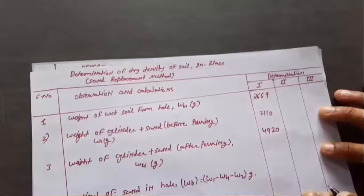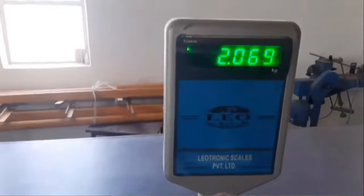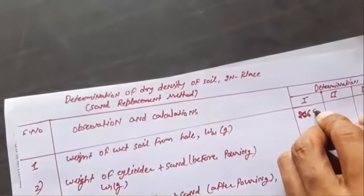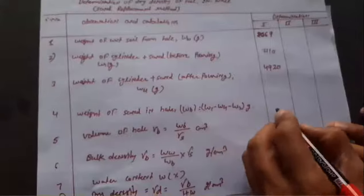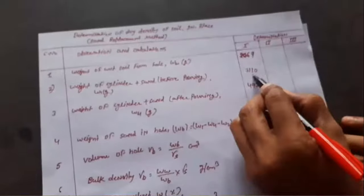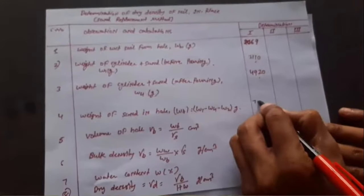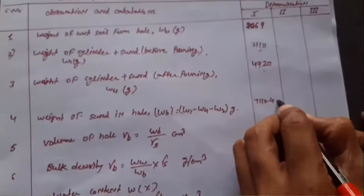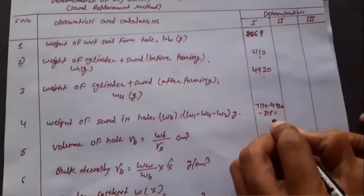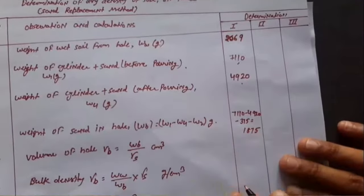Weigh the soil collected from the hole, which is 2069 grams, and record it in the observation sheet. Now we need to calculate the weight of sand in the hole, Wb = W1 − W4 − W2, which comes out to be 1875 grams.